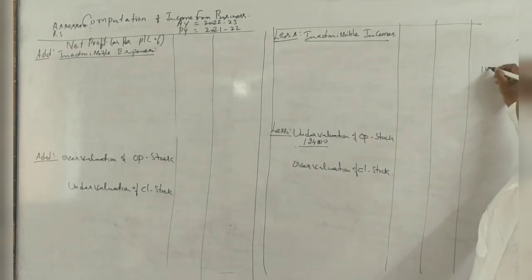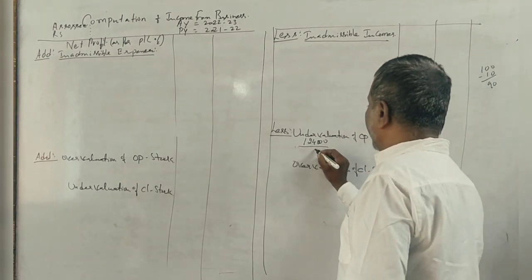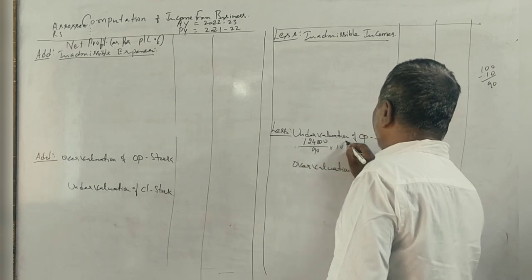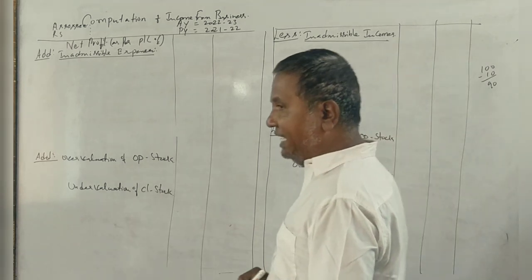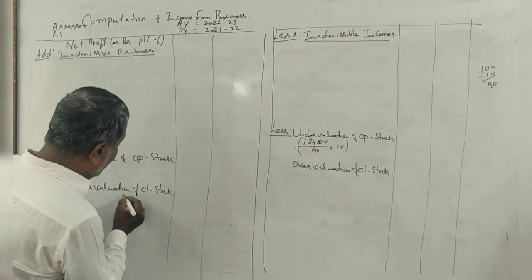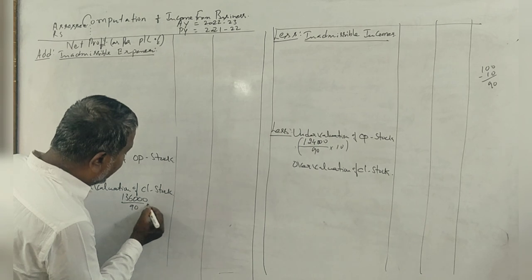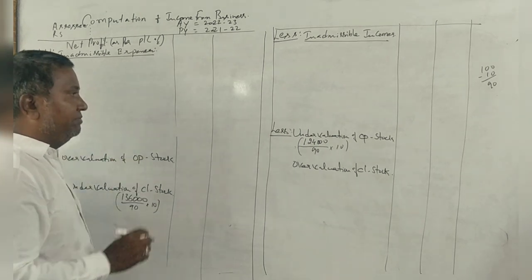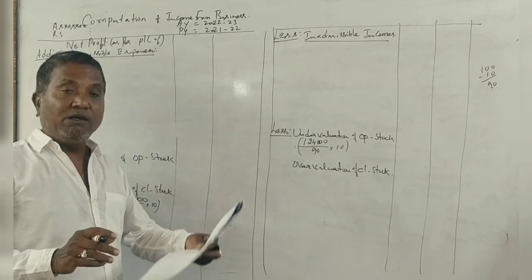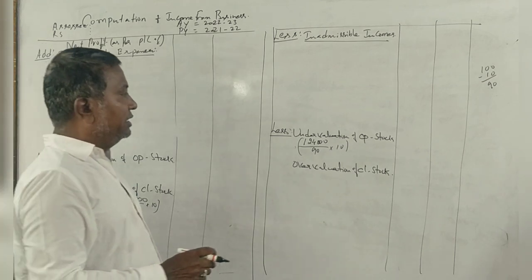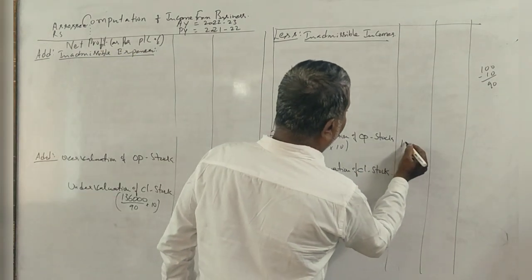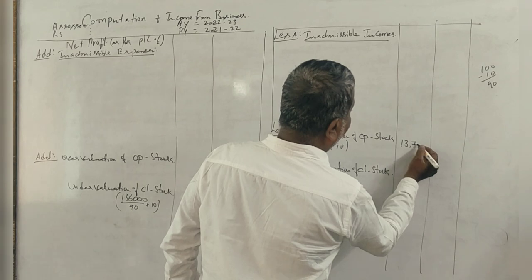For 100,000, they will show you 10% less, that is 90% of the value. Now it is 10% of the stock. Closing stock is undervalued at 1,36,000. This is 90% and it is 10% less. What is the figure? 13,770.